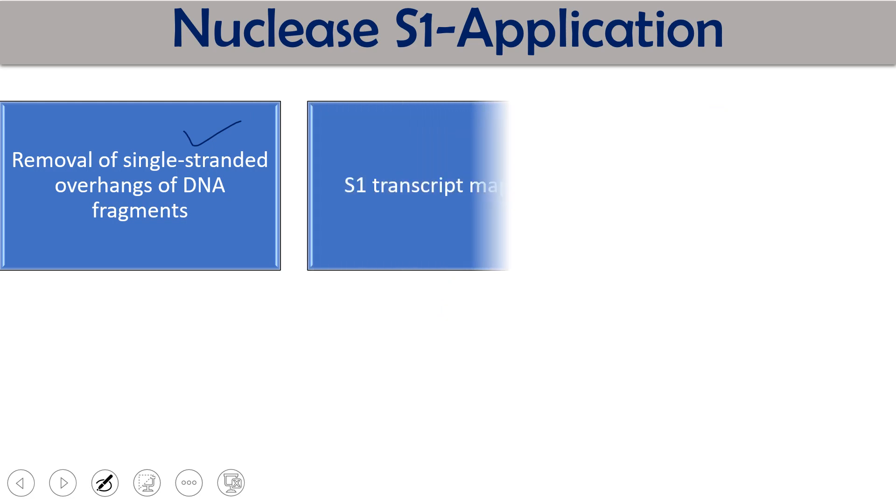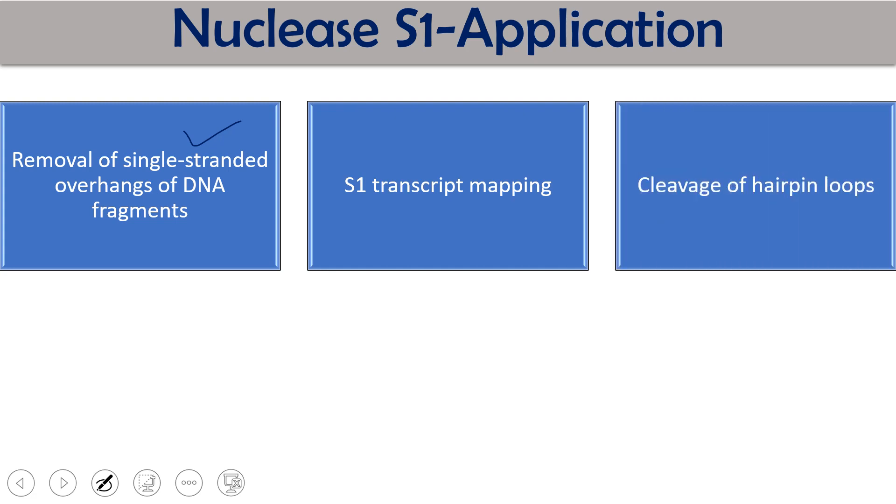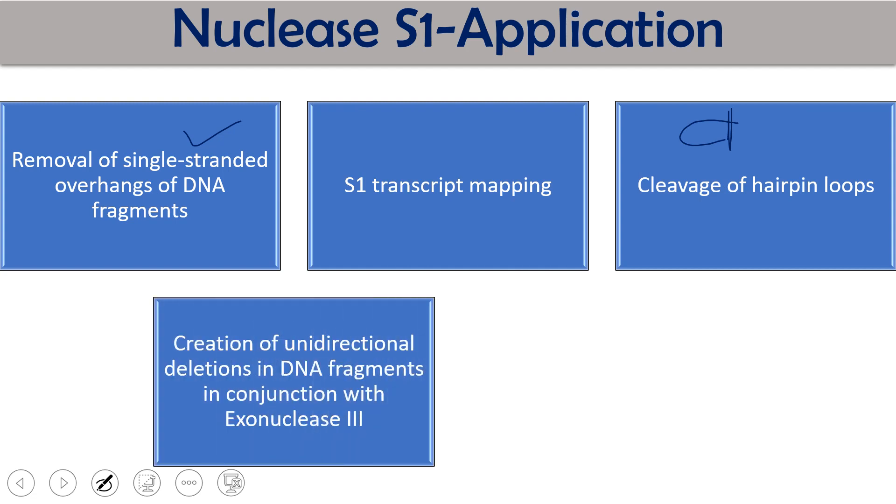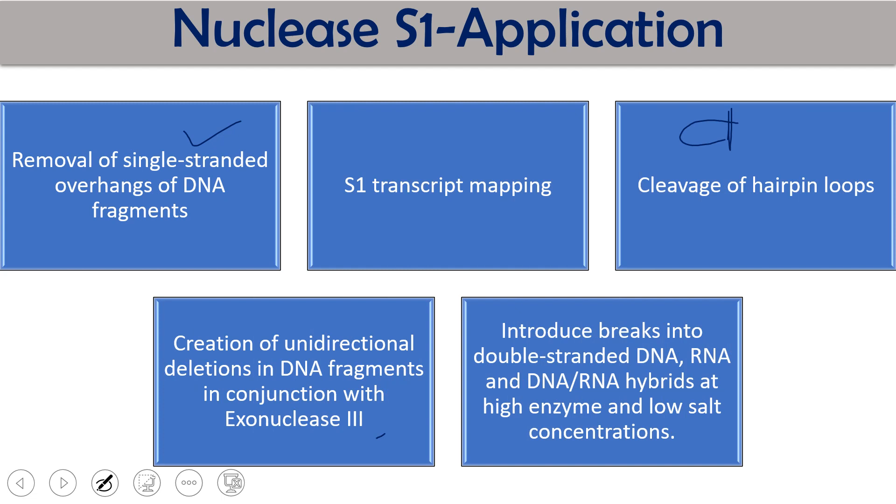Second, it is used in S1 transcript mapping. Third, it helps in the opening of hairpin loops generated during the production of cDNA. In a few lectures we are going to talk about how cDNA library is created. There the hairpin loops need to be cleaved by this S1 nuclease. Fourth, creation of unidirectional deletion of DNA fragment in conjugation with exonuclease III. And last, it introduces breaks in double-stranded DNA RNA or hybrid at high enzyme and low salt concentration.